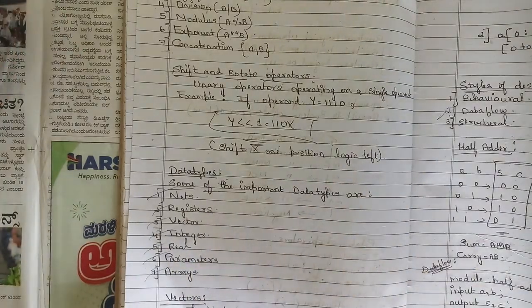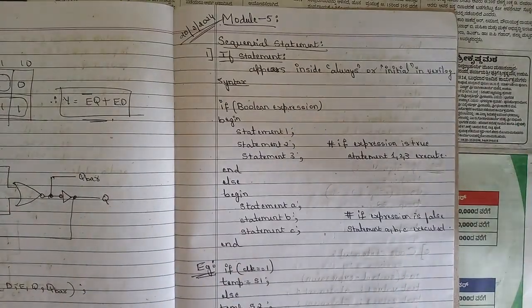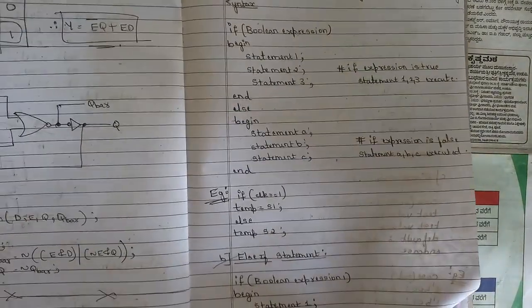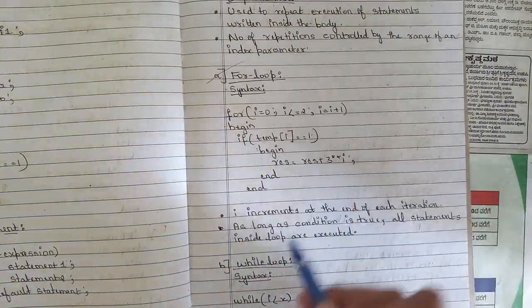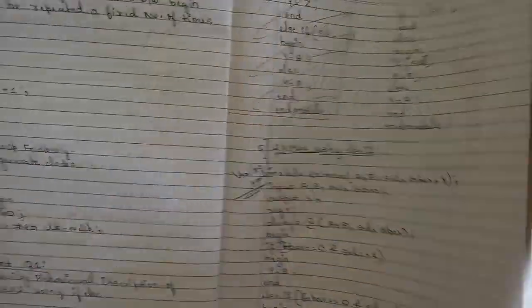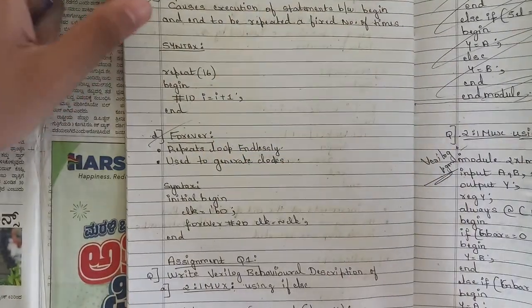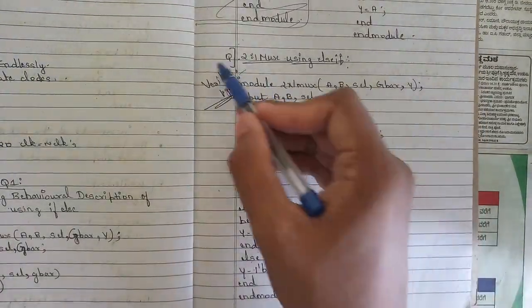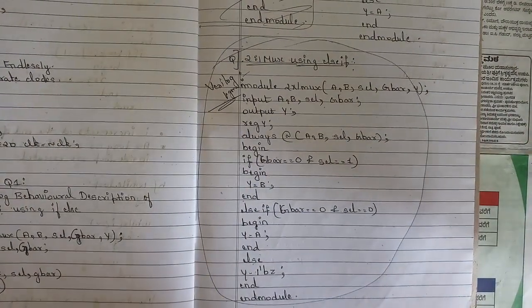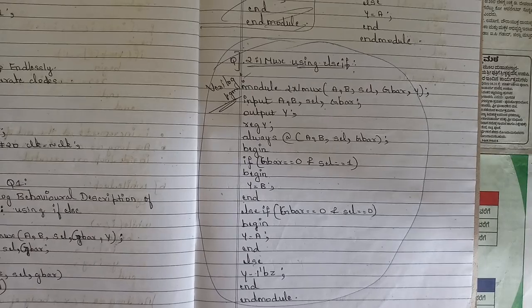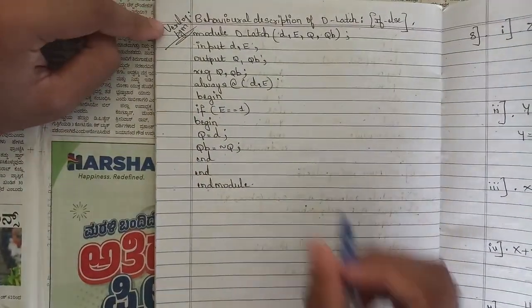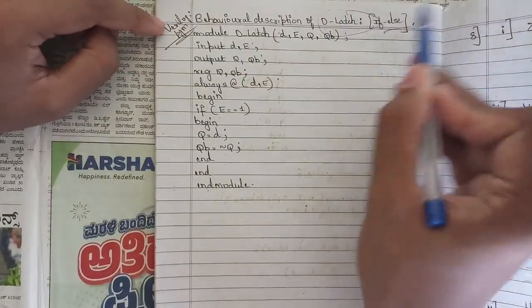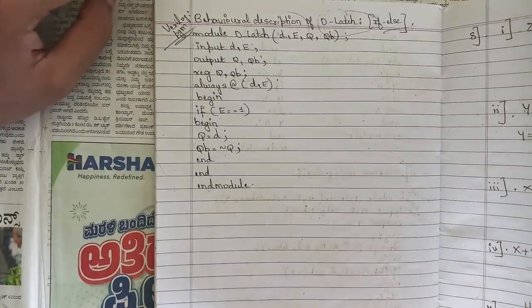From Module 5, brush up on sequential statements: if statement, else-if statement, case statements, and loop statements — for loop, while loop, do-while loop, repeat statement, and forever statement. One fixed question is a Verilog program for a 2-to-1 MUX using else-if statement. Another fixed question is the behavioral description of a D-latch using if-else statement — note this code down.